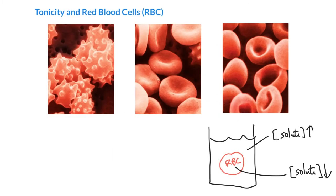Let's see how this affects red blood cells. Imagine we've got a red blood cell, or RBC for short, in a solution. Our solution has a high solute concentration compared to the inside of the red blood cell, which has a low solute concentration. The red blood cell behaves in many ways as a semipermeable membrane — water can pass through, but large solute molecules can't move through.